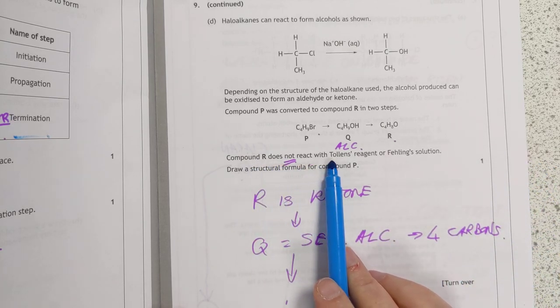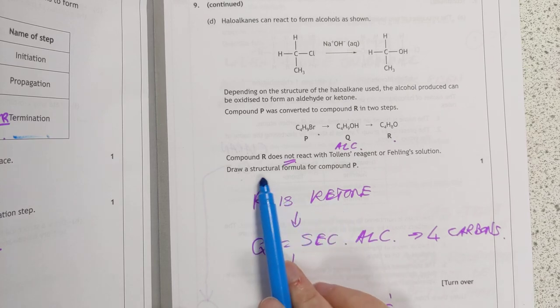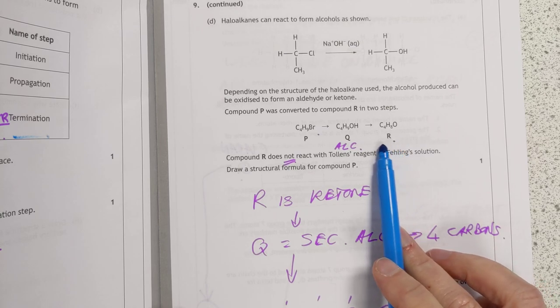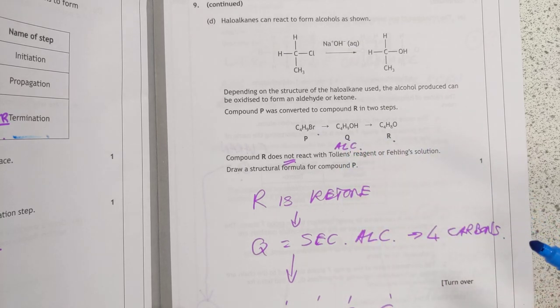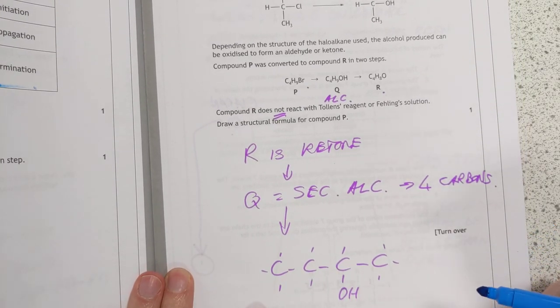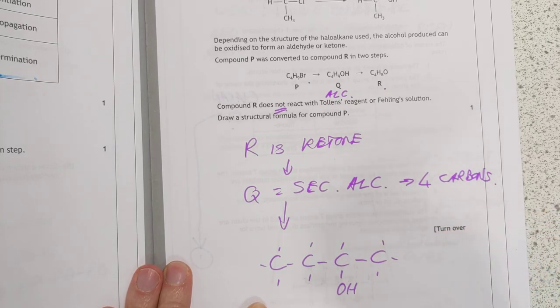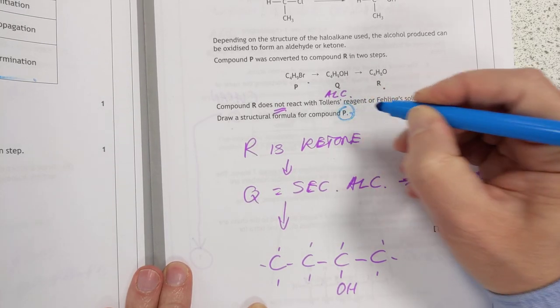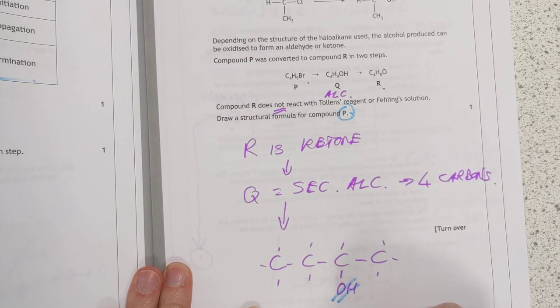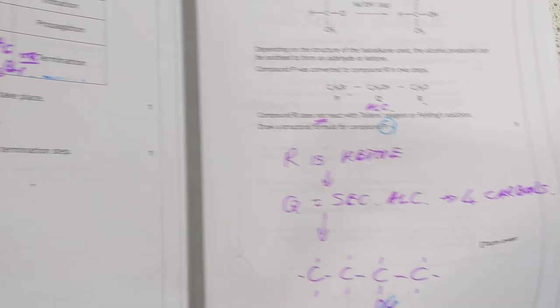This was a lot of work for one mark. Compound R does not react with Tollens. Therefore R is a ketone. Draw a structural formula for P. So if R is a ketone, you're working backwards to that. That must have been a secondary alcohol. This is why you check your answers over guys. I actually left it with the secondary alcohol. That's not what they're asking. RTFQ. They're asking for P. So that is replaced with a bromine, because it gets knocked off and replaced with an OH to form the secondary alcohol, which is then oxidized to make the ketone.